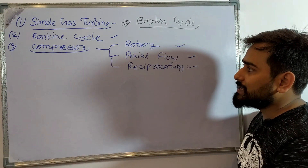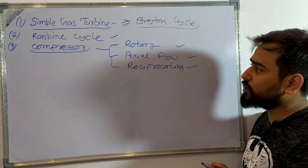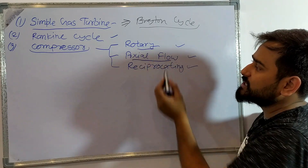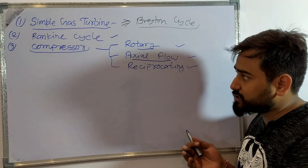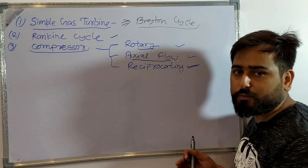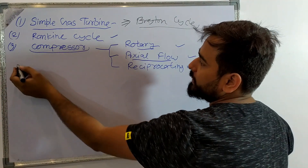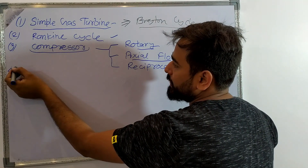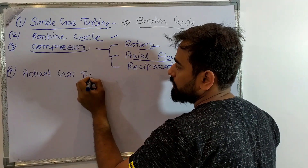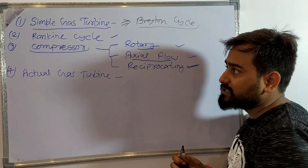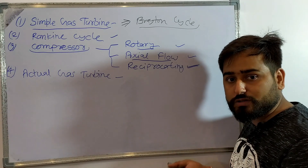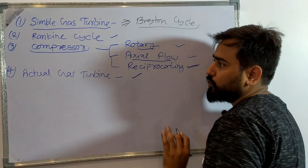Now we will discuss the engineering services pattern — they have mentioned this. We will learn the theory of axial flow and then do numericals. For GATE, there are three things to see. The fourth chapter is the Actual Gas Turbine. In a simple gas turbine we talk about ideal conditions, but in the actual process we talk about real conditions — that is our fourth chapter.